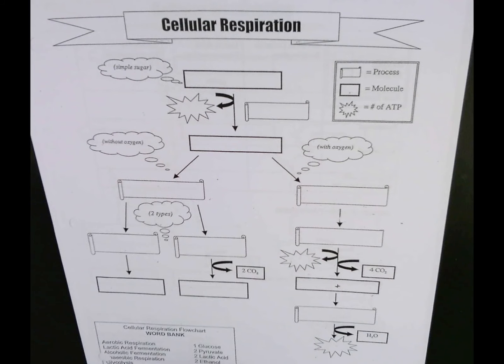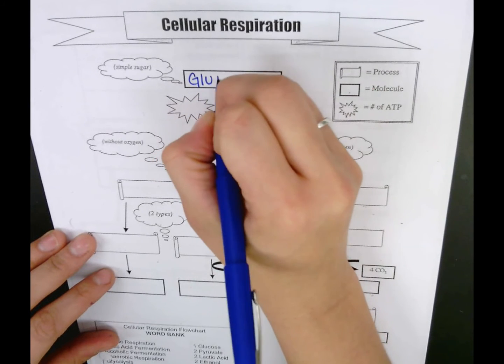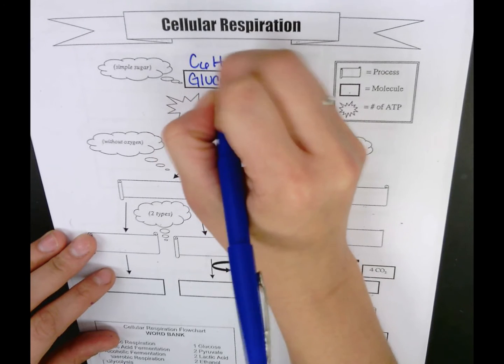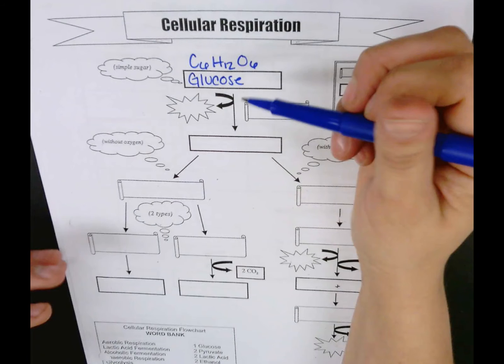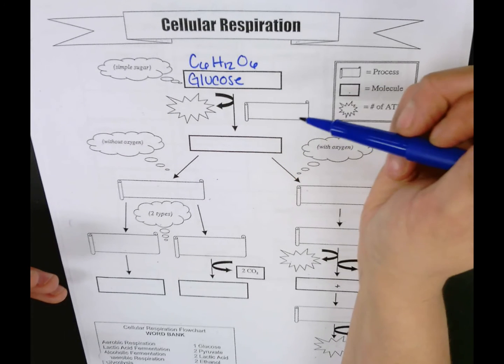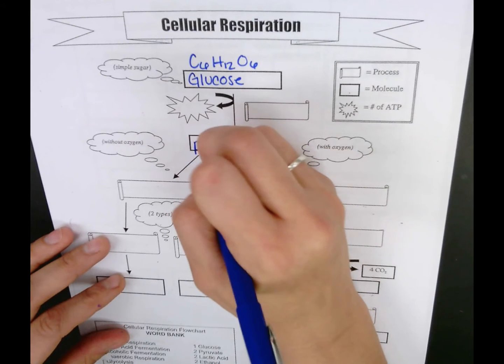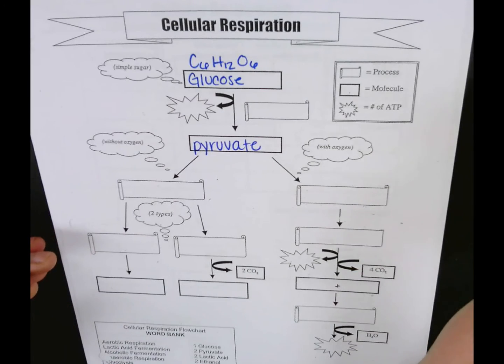So the first thing I want to start with is what sugar do we begin with? We begin with glucose, and for those of you who don't remember, that is C6H12O6. Glucose breaks down and releases something in a certain process, but it breaks down into something called pyruvate, or you may know it as pyruvic acid.